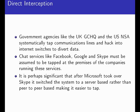Government agencies like GCHQ and the National Security Agency tap communications lines. Chat services like Facebook, Google and Skype must be assumed to cooperate with these agencies and transmit data to them. It's significant that when Microsoft took over Skype, they switched it to a server-based rather than a peer-to-peer network.